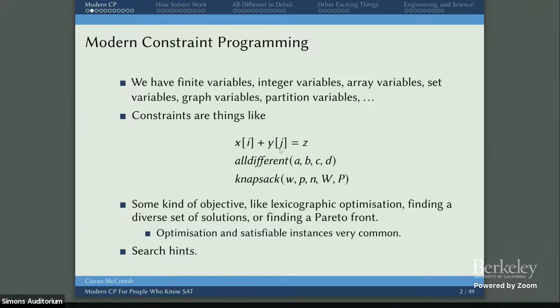A constraint might be something like x_i plus y_j equals z, where x is an array of integer variables, i is a variable, y is an array of integer variables, j is an integer variable, and z also a variable — so potentially variables all over the place. We might also say all-different: variables a, b, c, and d will have to take different values.